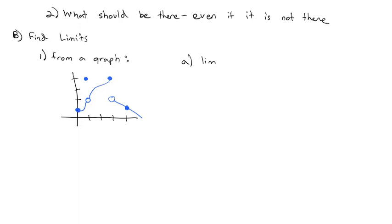We're going to find the limit as x approaches 1 of the function. When x is getting close to 1, what is the graph getting close to? We see at x=1 the point is actually up at y=4. But we don't care what's actually happening at the point — we care what's happening close to the point. Close to x=1, there's a y-coordinate of 2. So the limit as x goes to 1 is equal to 2.